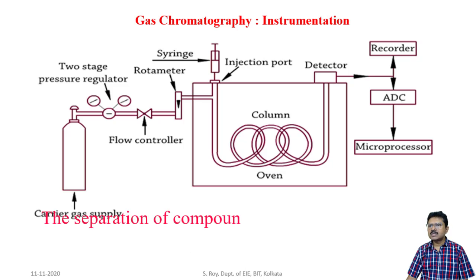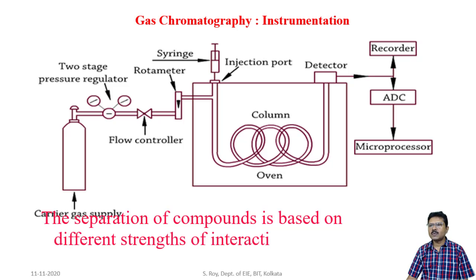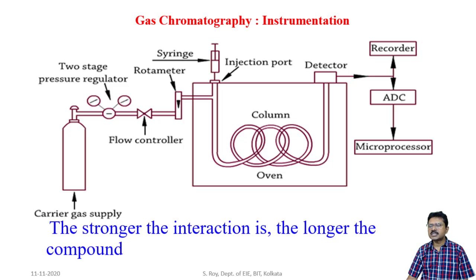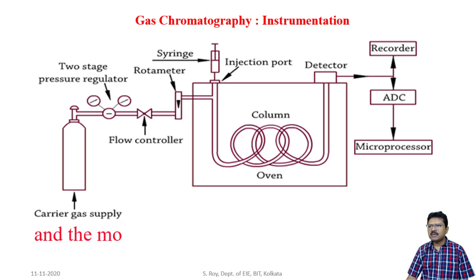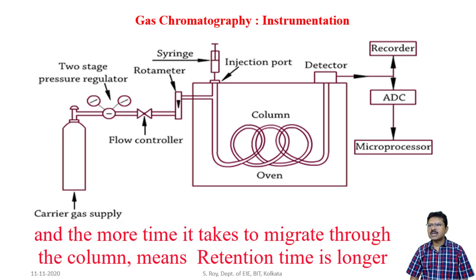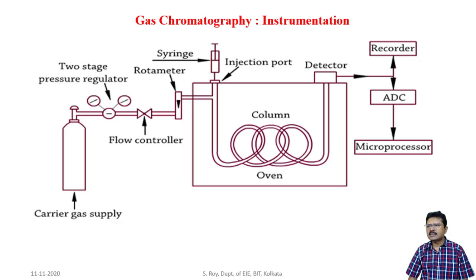The separation of compounds is based on different strengths of interaction of the compounds with the stationary phase. The stronger the interaction, the longer the compound interacts with the stationary phase and the more time it takes to migrate through the column — meaning the retention time is longer. When a mixture of different components traverses the column, the components interact differently with the column: one component will have more interaction, another will have less.